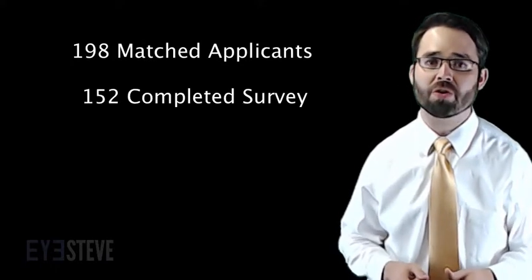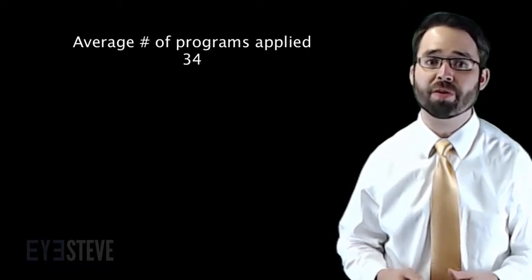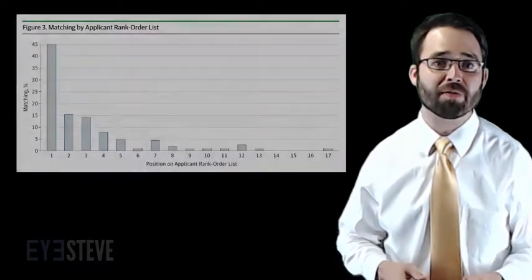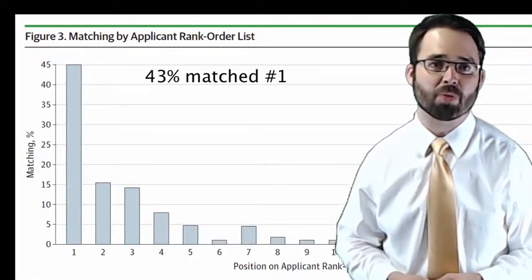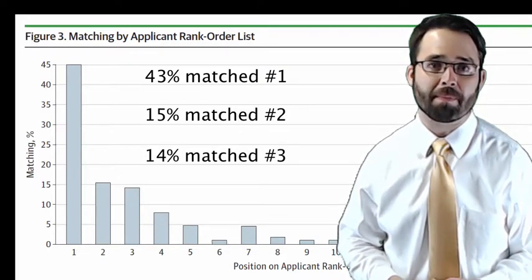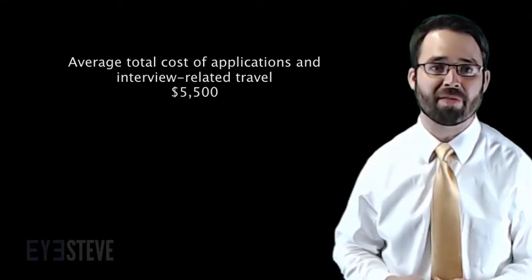The survey was sent to 198 matched applicants and 152, or 77%, completed the survey. Matched applicants applied to an average of 34 programs and ranked 12 of these programs. Out of the 152 matched applicants, 43% matched at their number one ranked program, 15% matched number two, and 14% matched number three. The average total cost of applications and interview-related travel was $5,500.